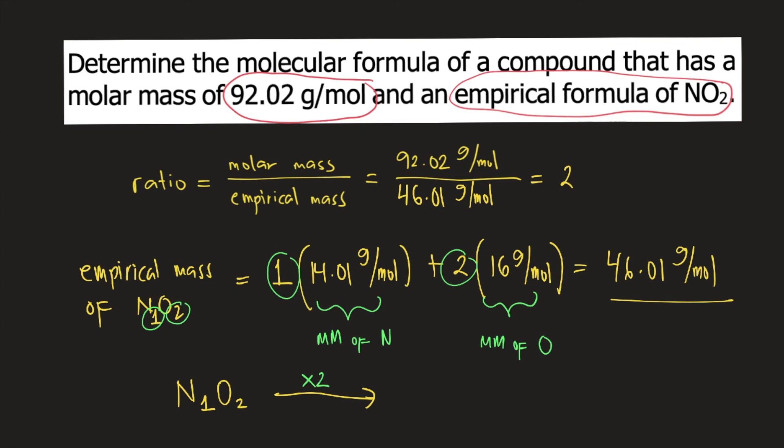Nitrogen becomes 1 times 2, so N subscript 2. Oxygen becomes 2 times 2, that is equal to 4. So our molecular formula is N2O4. And this is the answer to the question.